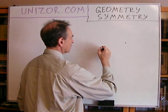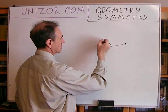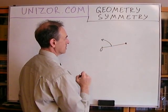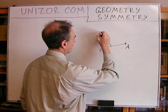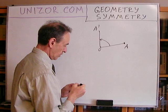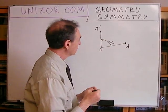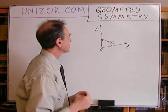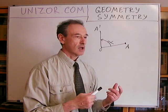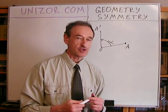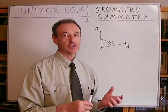Rotation around a certain point by a certain angle is very simple. This is just rotation of the segment which connects the center of rotation with our point into a different location, A prime. Point A after rotation by angle alpha will take the position of A prime. The question is: what kind of a geometrical object has the property of transforming into itself after this particular rotation?